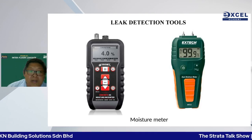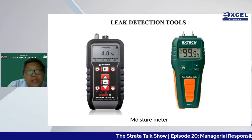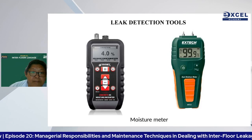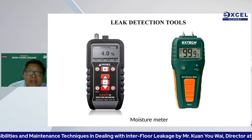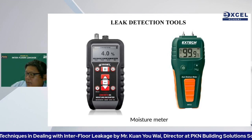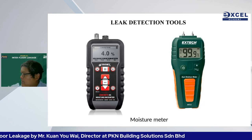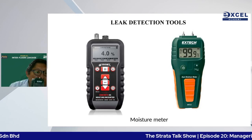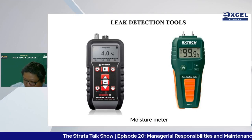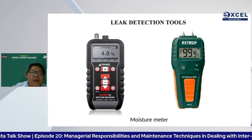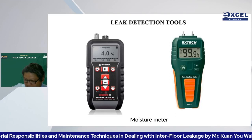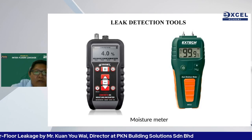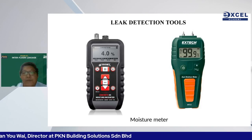Equipment used for leak detection includes moisture meters of two main types: one uses sound, the other uses an anode-and-cathode pin system. When the pins are pressed onto a surface, water conducts electricity between them — the more water, the more electricity conducted. This is based on the principles of resistance and electric flow.